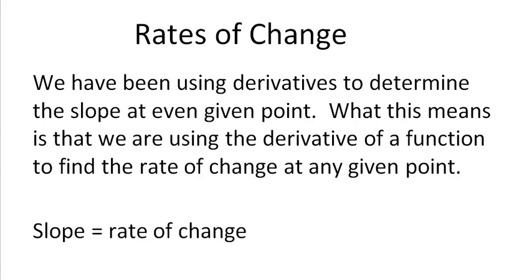What we've been using derivatives for so far is to determine the slope at a given point. This is what we call instantaneous rate of change — it is the slope, which is equivalent to rate of change, at a given point. What this means is that we are using the derivative of a function to find the rate of change at a given point. But average rate of change would be the slope, or the rate of change, between two points.